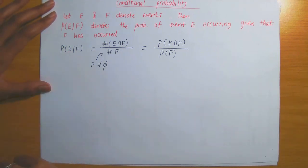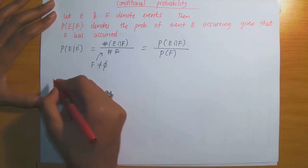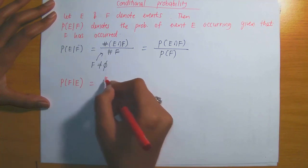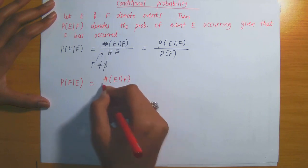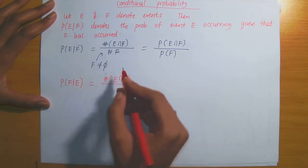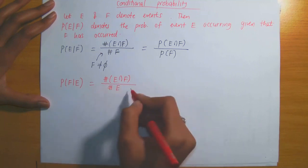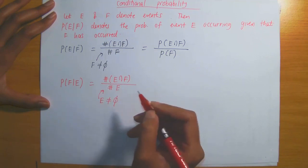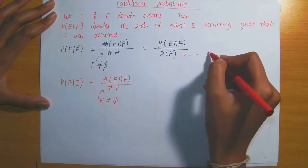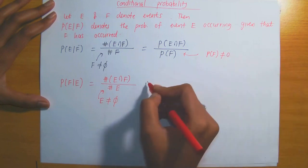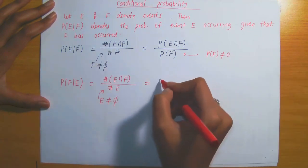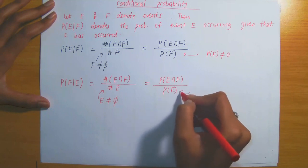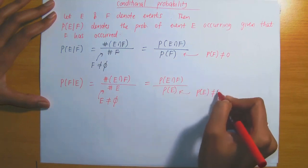We can also write down the probability of F given that E has occurred. Using the reduced sample space, this is the number of members in E intersection F divided by the total number of members in the set E — requiring that E must not be empty. Similarly, for the general sample space, it is the probability of E intersection F divided by the probability of E, requiring that the probability of E must not be zero.